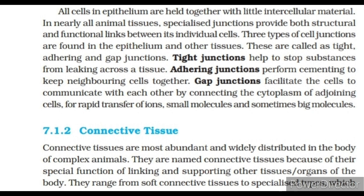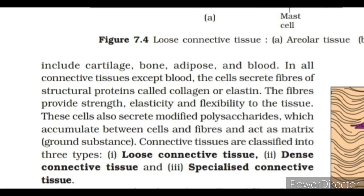Connective tissue: Connective tissues are the most abundant and widely distributed in the body of complex animals. They are named connective tissues because of their special function of linking and supporting other tissues and organs of the body. They range from soft connective tissues to specialized types which include cartilage, bone, adipose and blood. In all connective tissues except blood, the cells secrete fibers of structural proteins called collagen or elastin, which provide strength, elasticity and flexibility to the tissue. These cells also secrete modified polysaccharides which accumulate between cells and fibers and act as matrix or ground substance.